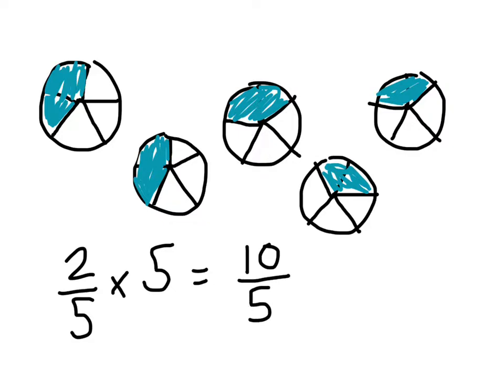10/5 is the same as 10 divided by 5 because that's what a fraction is. This is a division sign if we look at it like that. 10 divided by 5 is 2. We can also ask: how many times does 5 go into 10? It goes in two times, so we have a whole number of 2.